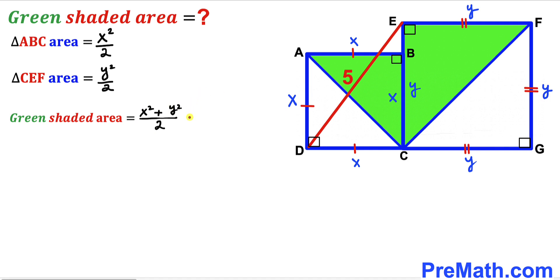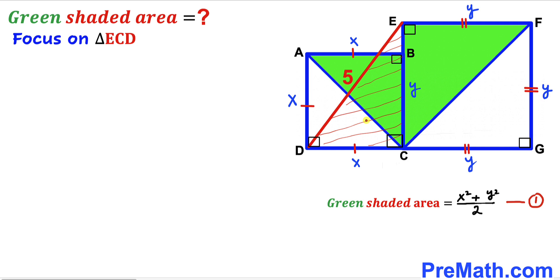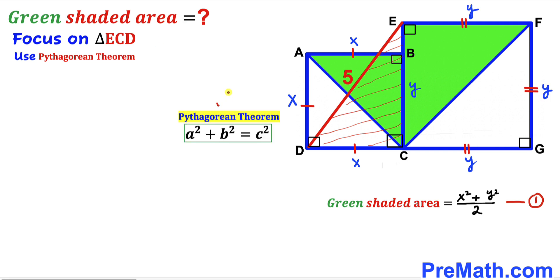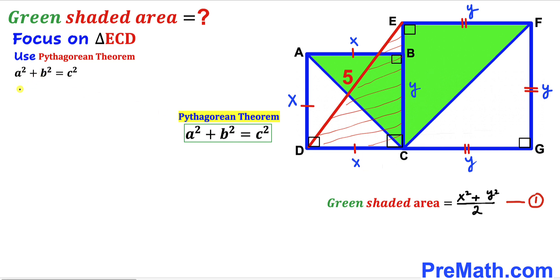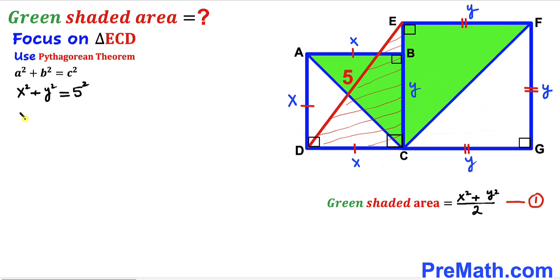Now let's focus on right triangle ECD and apply the Pythagorean theorem: a² + b² = c². The hypotenuse of this triangle is 5 units, while the two legs are X and Y. Filling in the formula: X² + Y² = 5², which simplifies to X² + Y² = 25. This is equation 2.